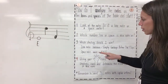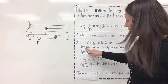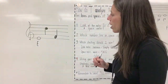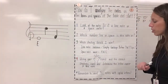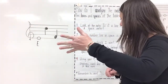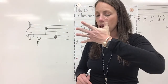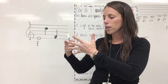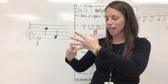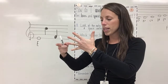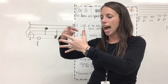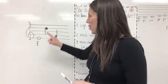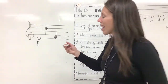Which strategy should I use? You told me it was a line note, so we're gonna use our sentence again: empty, garbage, before, dad, flips. And step four — using our hand and the correct strategy, we're gonna count and determine the letter name of the note. We are counting to line four this time: one, two, three, four. Now let's say our sentence — empty, garbage, before, dad, flips. What word did we say on line four? Dad. That's right, so this note is a D. Very good.